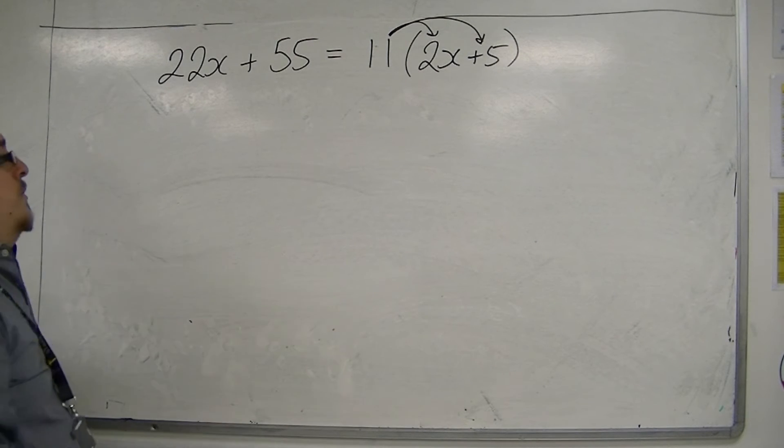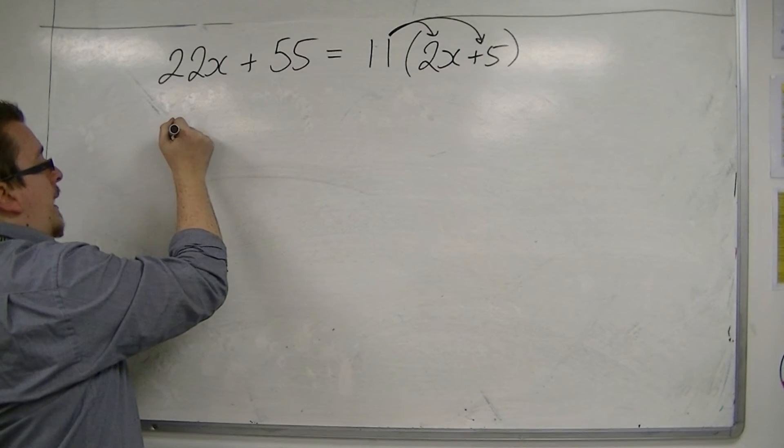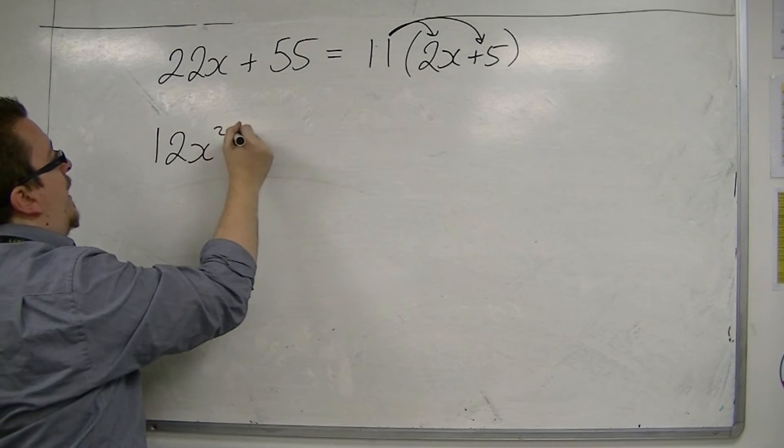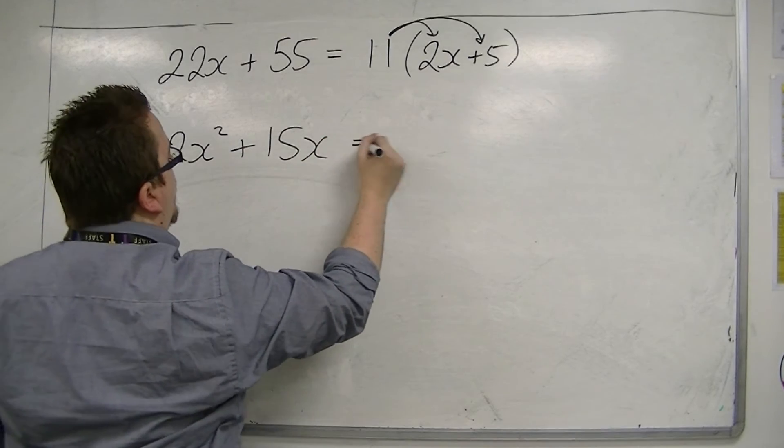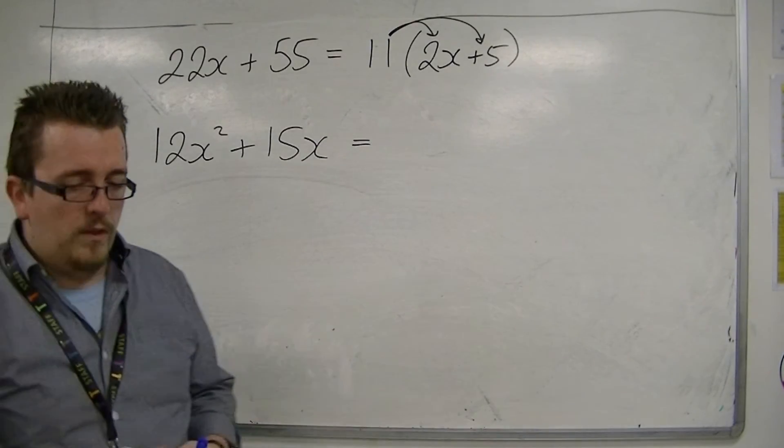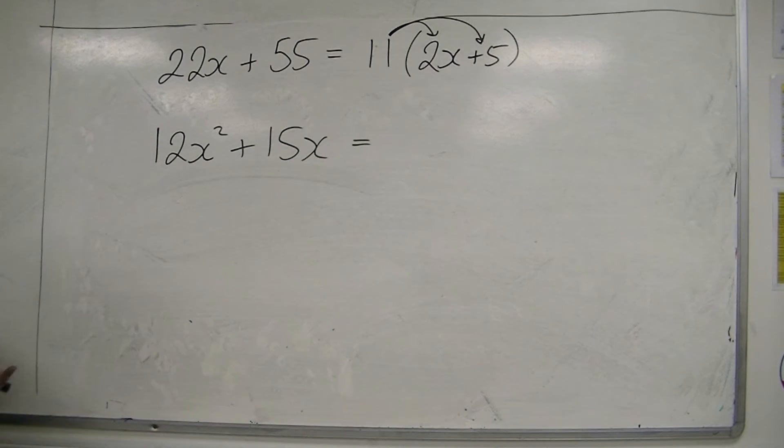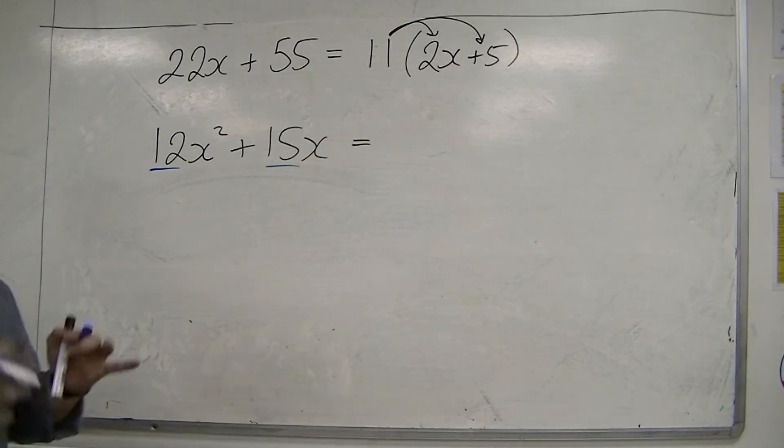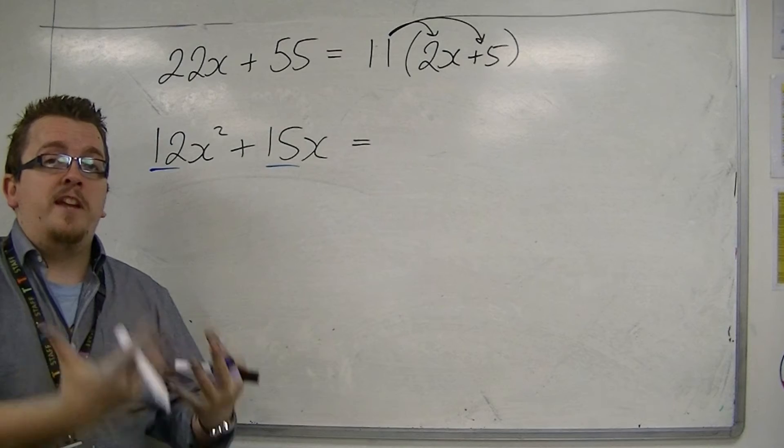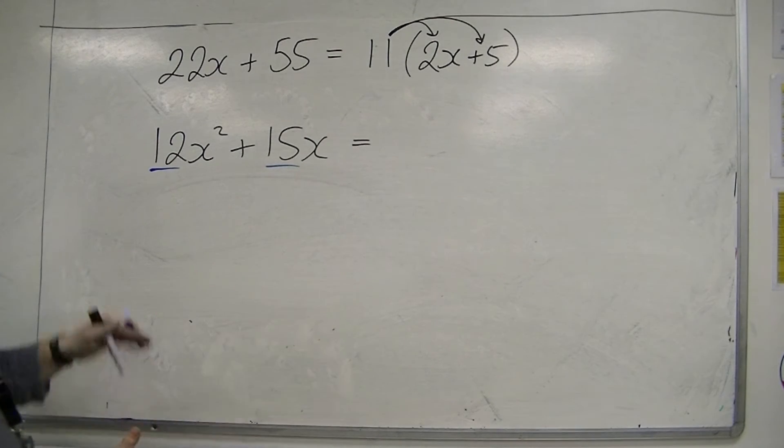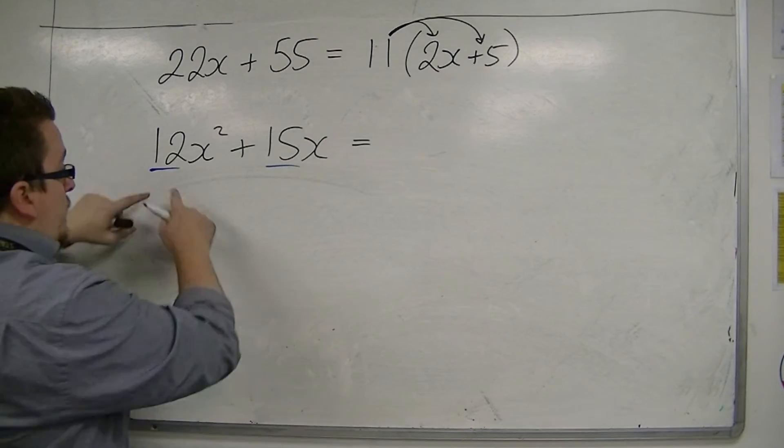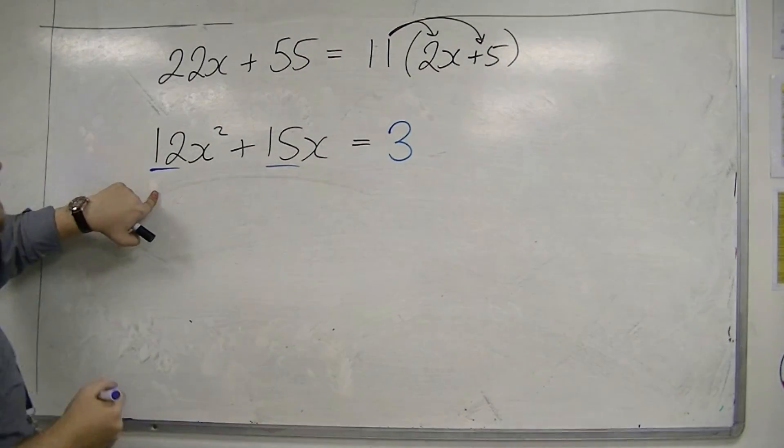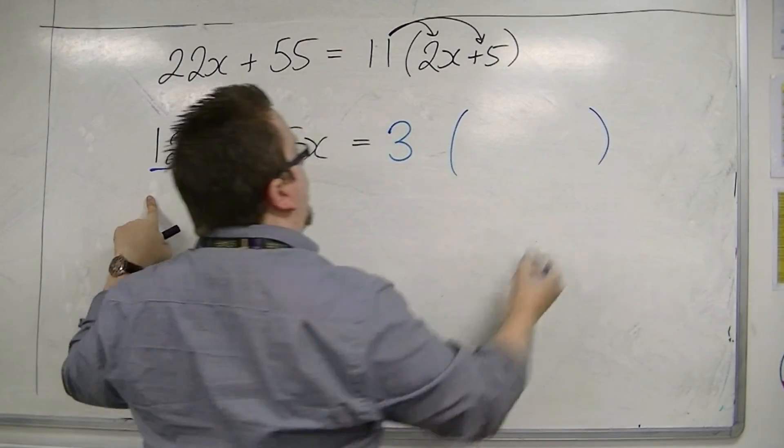So, what if instead we had something like, let's say we had something like 12x squared plus 15x. Factorise this. Well, some things we've got to take into account first. And first things first is that you look at the two numbers, the 12 and the 15. And we're dealing with, find the largest number that goes into both. What is the highest common factor of 12 and 15? Well, the highest common factor of 12 and 15 is 3. So, we know that 3 is going to be on the outside of the bracket.